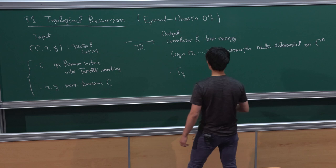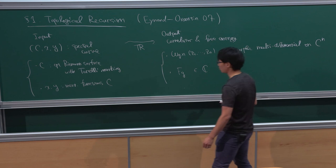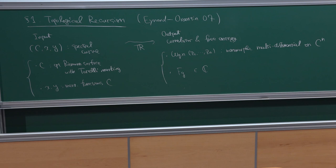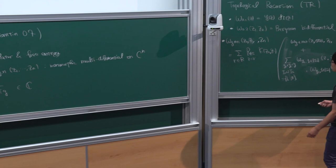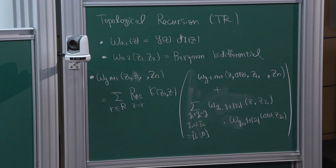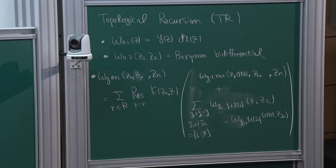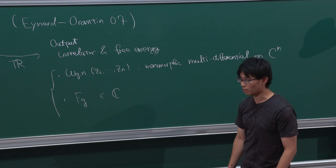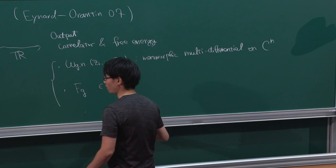Topological recursion also assigns some complex number. The first line is called the correlator and the second line is called the free energy. I'm writing the formula in advance — it looks complicated — but this recursion relation is basically obtained from the recursion structure appearing in asymptotic analysis of the matrix integral. It sometimes computes enumerative geometry invariants.